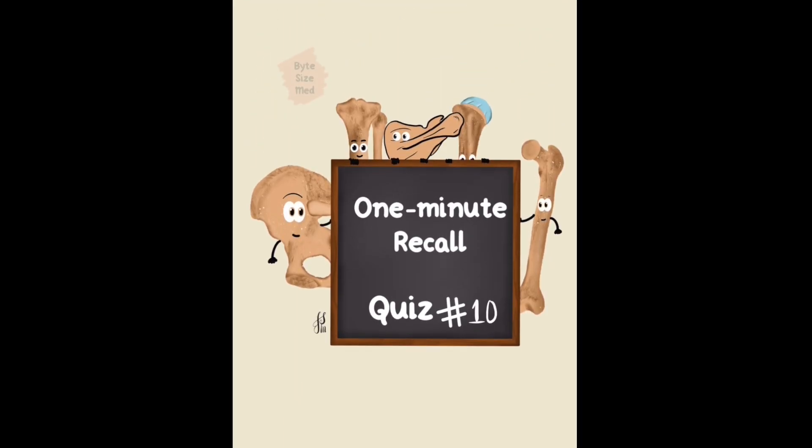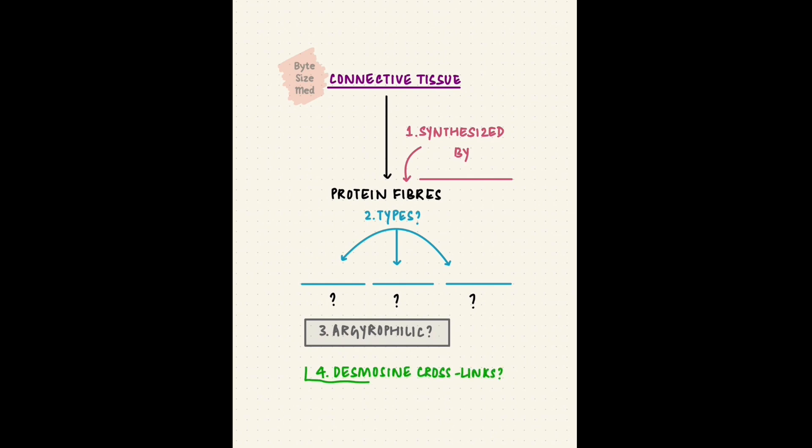That's a cell. This tissue also has fibers. Connective tissue has protein fibers. Your task is to recall which cell synthesizes proteins for these fibers. What are the three main types of fibers? Which is argyrophilic, which has desmosines and cross links, and which is the most abundant? You can pause the video here and take as much time as you need. But I just get one minute, so time's up.